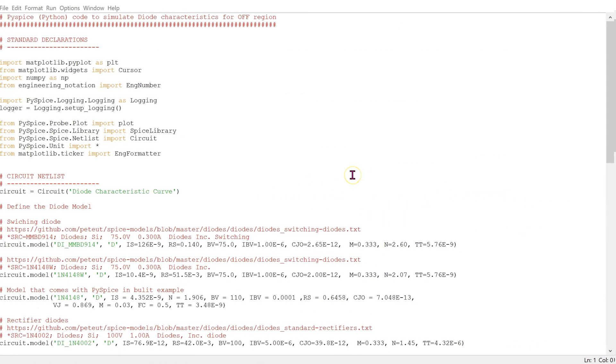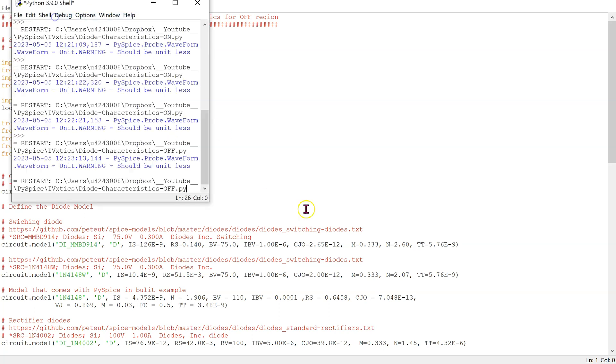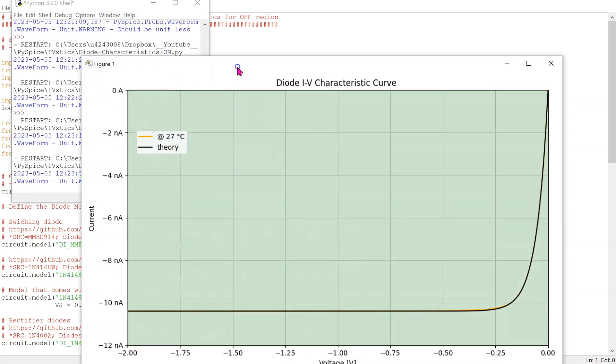This is a slightly differently formatted version of the same code to plot the diode characteristics in the OFF region. When we run the code, we obtain the diode characteristics.